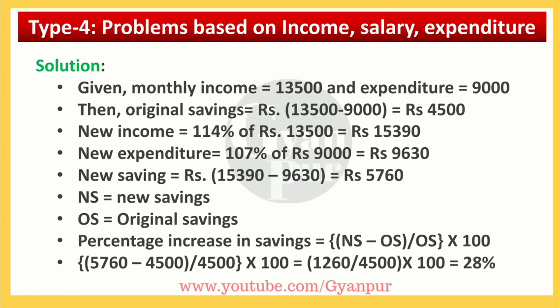The expenditure has a 7% increase, so what will be the new expenditure? 107% of Rs. 9,000, that is Rs. 9,630. Now, what will be the new saving? Since we have the new expenditure and new income, new saving will be new income minus new expenditure. That is Rs. 15,390 minus Rs. 9,630, which gives you Rs. 5,760.